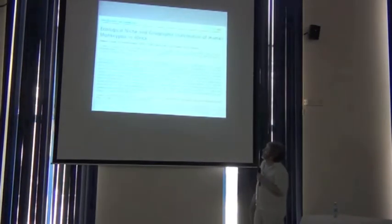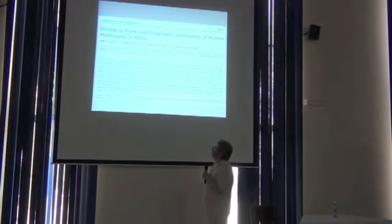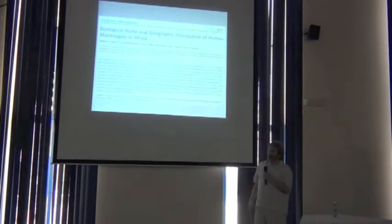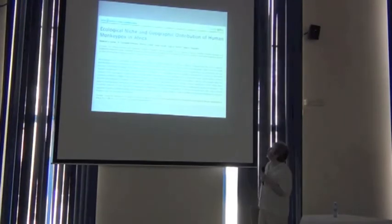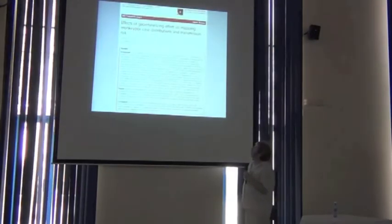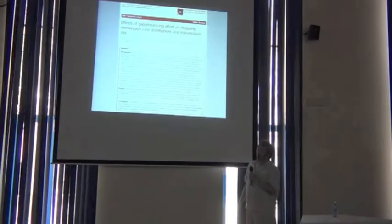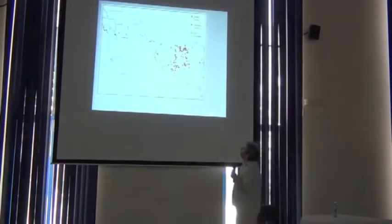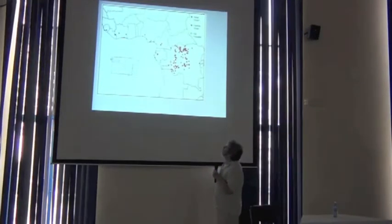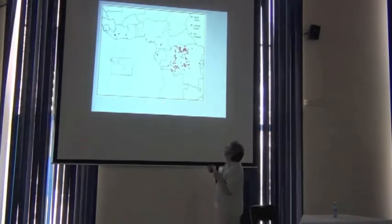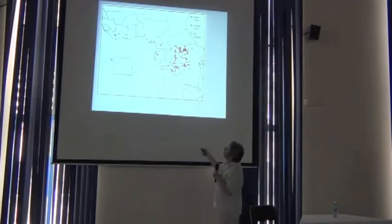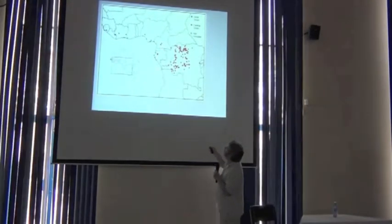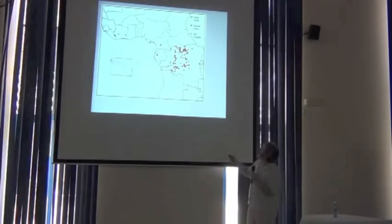Here's a paper we did a few years ago on the ecological and geographic distribution of human monkeypox across Africa. And here's the update, which is really the substance of the slide I'll show you right now. Monkeypox has two major clades: a West African clade and a Central African clade. There are some interesting things here.